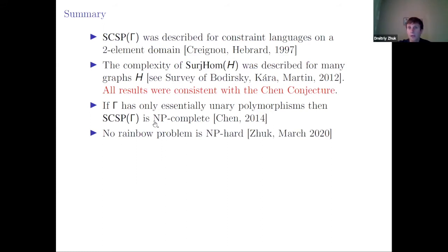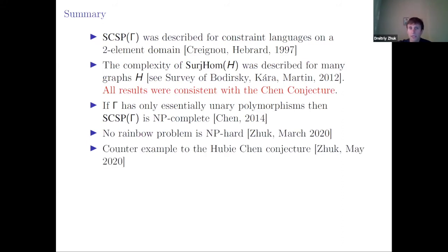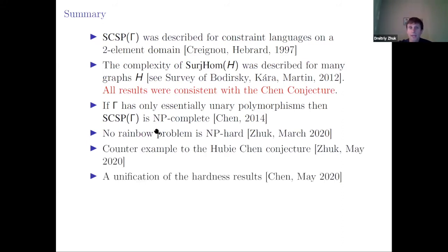This year, in March, I proved that the no rainbow problem is NP-hard, then I found the counterexample to Hubert Chen's conjecture, and then a bit later Hubert Chen published a unification of the hardness results, generalizing my idea about the no rainbow problem and explaining the approach.